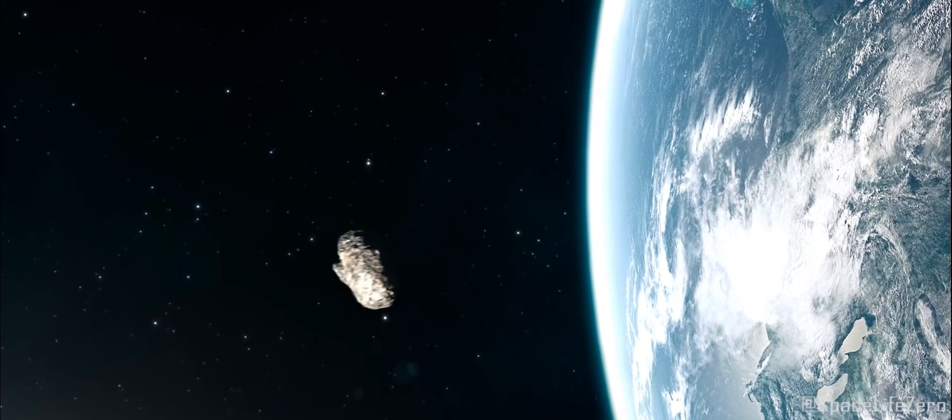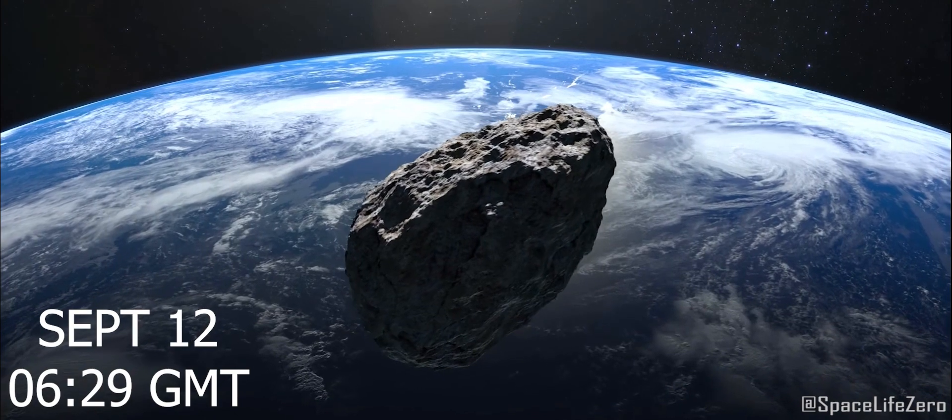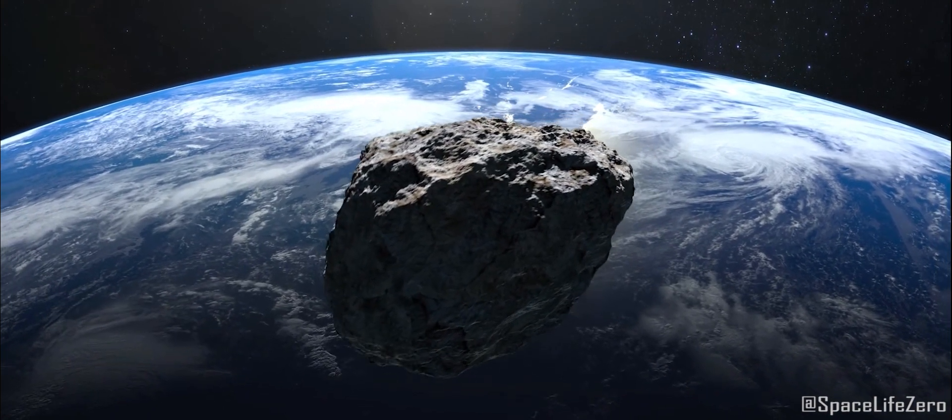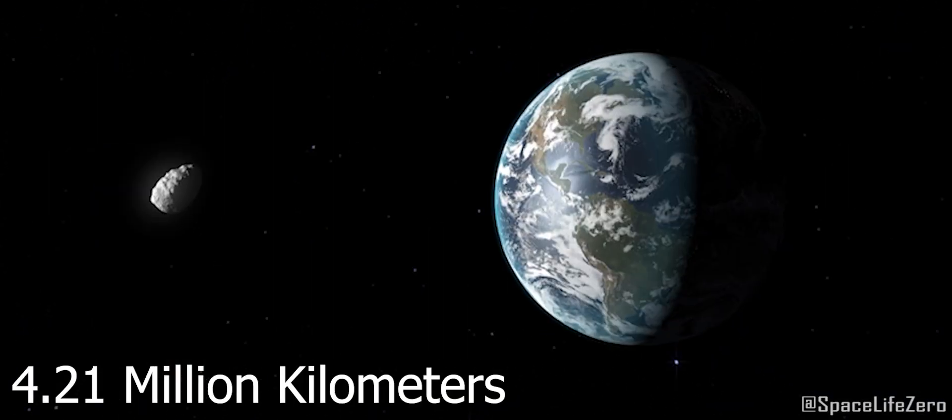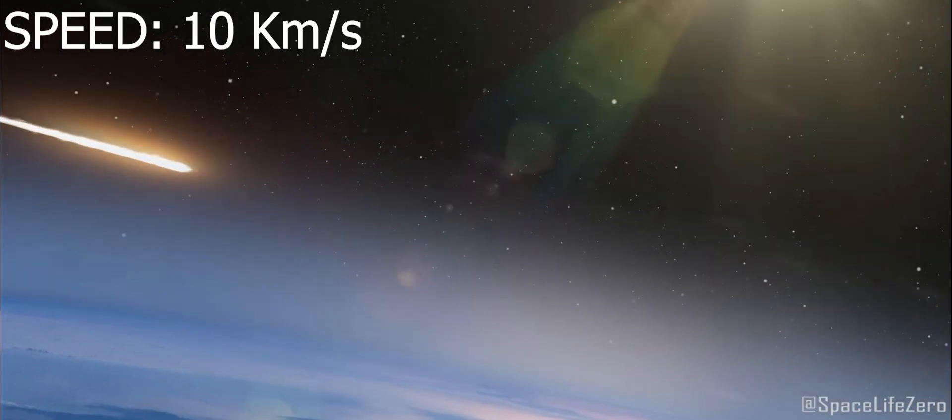This near-Earth object will pass past Earth on September 12, at 6:29 Greenwich Mean Time, at a distance of 4.21 million kilometers at a speed of 10 kilometers per second.